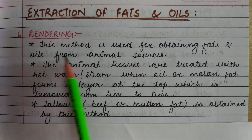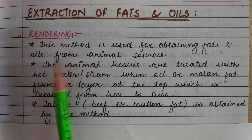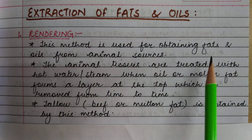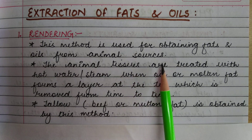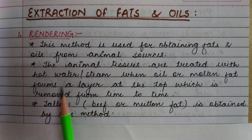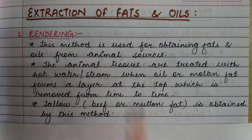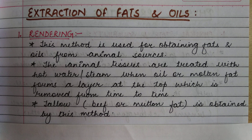The first method of extracting fats and oils is rendering. In this method, fats and oils are obtained from animal sources. The animal tissues are treated with hot water or steam, and the oil or molten fat forms a layer at the top, which is removed from time to time.